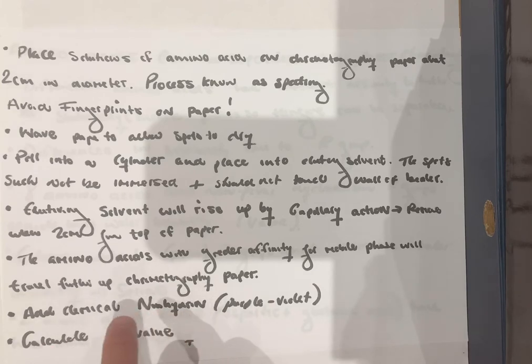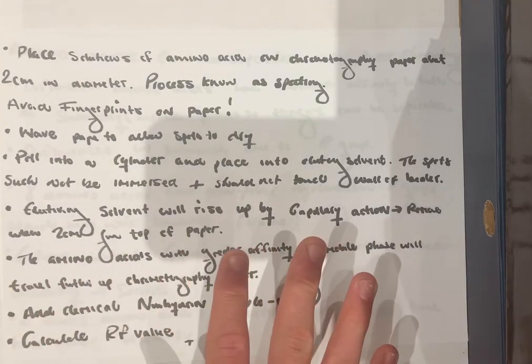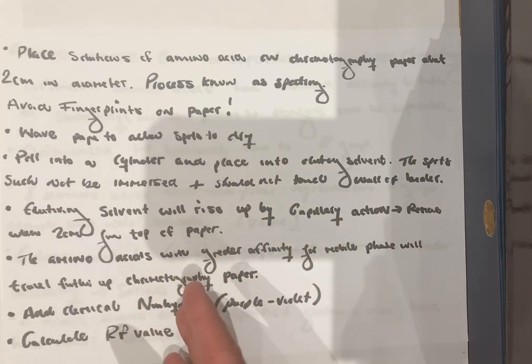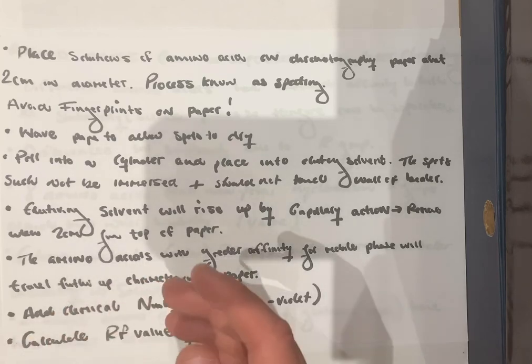The retardation factor, or the RF value, is calculated by the distance moved by the amino acid, or the solute, divided by the distance moved by the solvent, which is the eluting solvent. This value should always be between zero and one. It can never be greater than one.